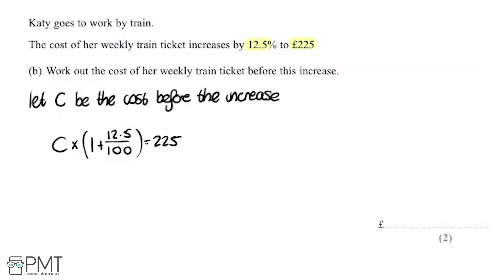Now we need to solve for C. I'm firstly going to work out what's in this bracket. So we're going to have C multiplied by 1.125, and that's again equal to 225.